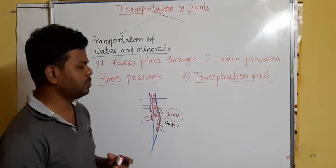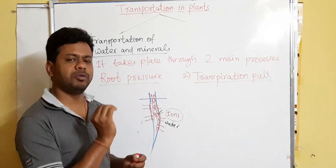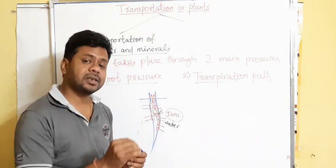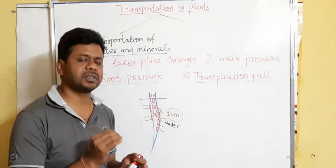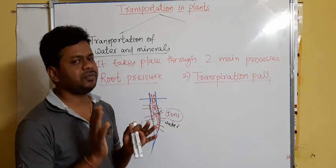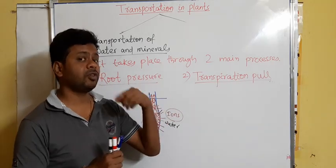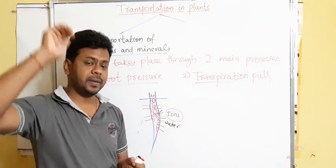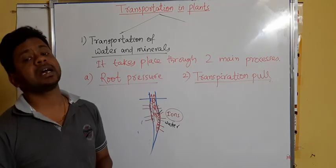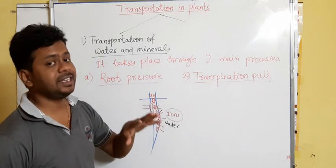In root pressure, the water will move up, but not with high pressure — very slowly. That is why this mechanism is helpful for those plants which have very little height, like herbs and grass. For short-height plants, root pressure is sufficient for moving water from root to leaves. But for trees which are several meters high, this pressure is not sufficient enough to move water to such height. So root pressure is helpful for those plants which are short in height.